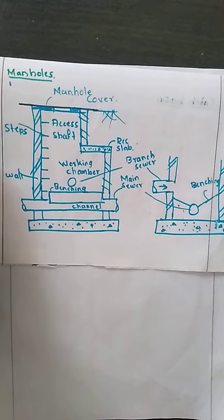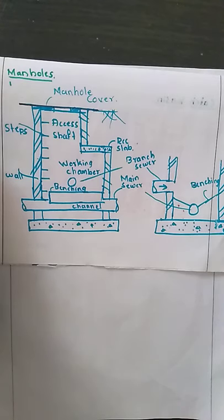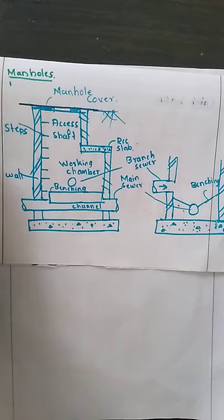The top cover of the manhole has a width of normally around 10 centimeter, and the depth of the frame of the top cover will be around 20 to 25 centimeter. In summary, a manhole is provided at junctions, wherever there is a change in diameter, or wherever there is a change in gradient.